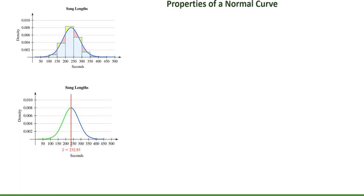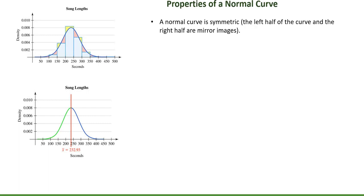In this video we're going to talk about the normal probability distribution. Let's start by discussing the normal curve. A normal curve is used to model a symmetric distribution — that's when the left half of the distribution and the right half are mirror images, or approximately mirror images.